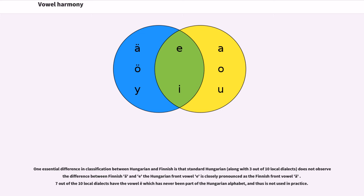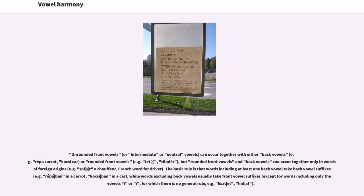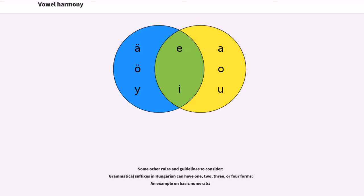One essential difference in classification between Hungarian and Finnish is that Standard Hungarian does not observe a difference between Finnish A and Ä. Seven out of ten local dialects have the vowel E-diaeresis, which has never been part of the Hungarian alphabet and thus is not used in practice. Some rounded front vowels can occur together with either back vowels or rounded front vowels, but rounded front vowels and back vowels can occur together only in words of foreign origin. Grammatical suffixes in Hungarian can have one, two, three, or four forms.